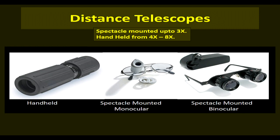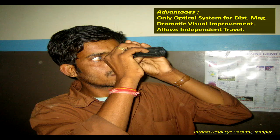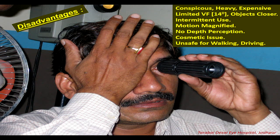Distance telescopes are available up to 3x in spectacle-mounted form, and handheld telescopes are available from 4x to 8x or more. Most telescopes are Galilean because they are small, but for higher magnification a Keplerian telescope with inverting prism is preferred. The advantages of telescopes are that they are the only optical system for distance magnification, provide dramatic visual improvement, and allow independent travel. The disadvantages are that they are conspicuous, heavy, expensive, have a limited visual field of only 14 degrees or less, and are unsafe for walking and driving.